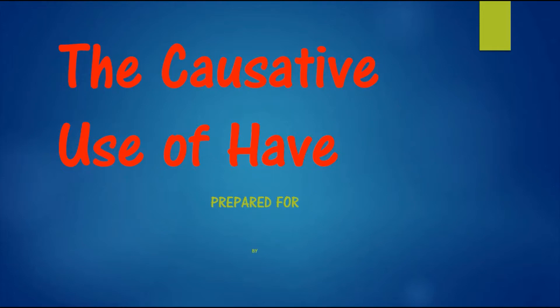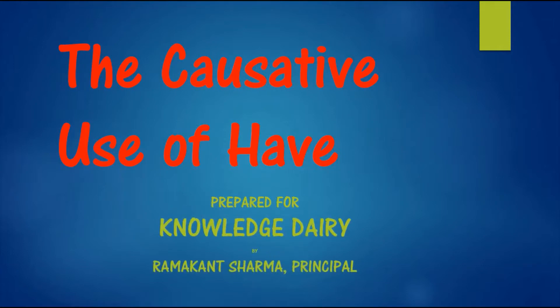The causative verb is of three types: have, get, and make. Today we are having a study of 'have' and we will see how to use the passive.